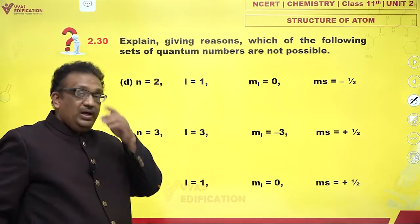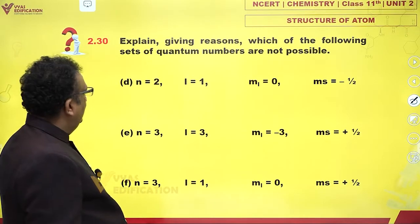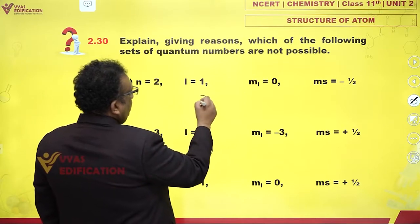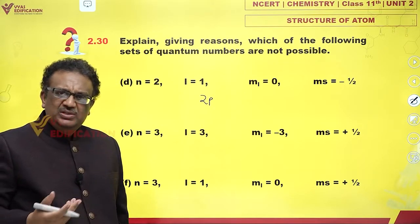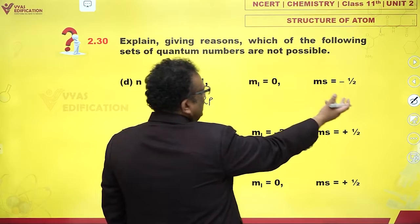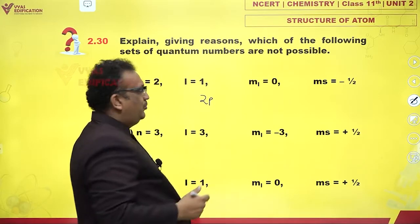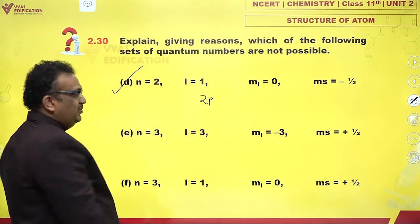n equals 2, l equals 1. That means 2p orbital. Is 2p orbital possible? Yes. ml can always be 0, spin can be plus half, minus half. No problem. It is quite possible. No issues.